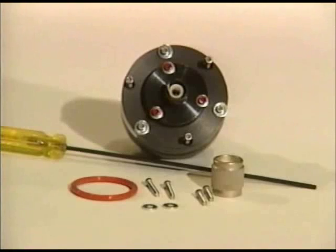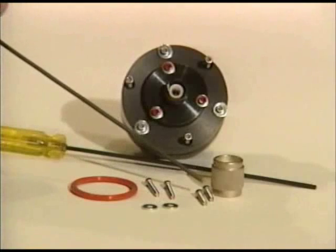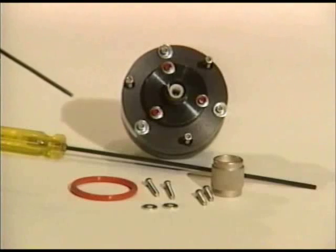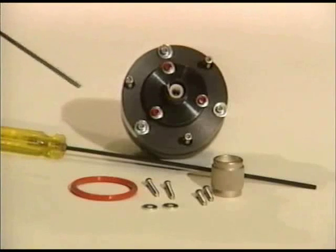We've also provided some extra parts. We've got some spare tilt screws, some spare locking screws, and also some spare washers. The tilt screws are always the longer ones. The locking screws are the shorter ones. Finally, there's our rubber O-ring that's used for adjustment.